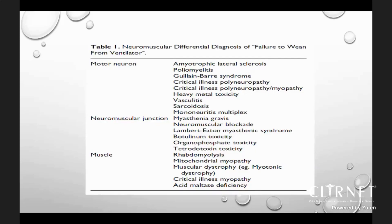We must make a differential diagnosis of neuromuscular disorders when trying to wean patients off the ventilator. When the motor neuron is affected, differential diagnoses include amyotrophic lateral sclerosis, poliomyelitis, Guillain-Barré syndrome, heavy metal toxicity, vasculitis, sarcoidosis, mononeuritis multiplex, critical illness polyneuropathy, and myopathy.